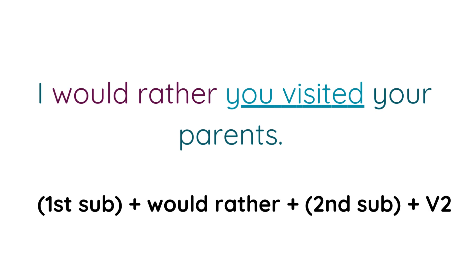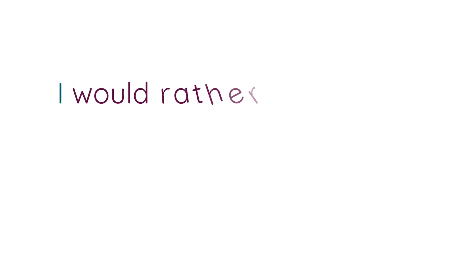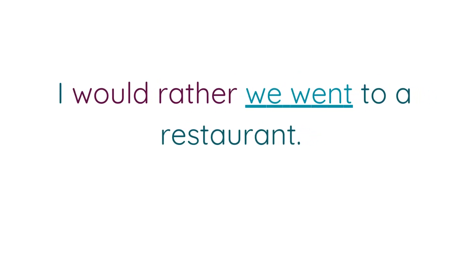When there is a second subject — a different subject — we use the V2 form. See the example: I would rather we went to a restaurant. Okay, you can cook at home, but I would rather we went to a restaurant. Notice the V2 form 'went' is used here because I am the one going to eat in the restaurant.